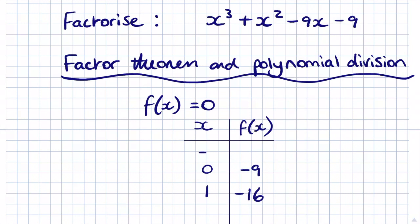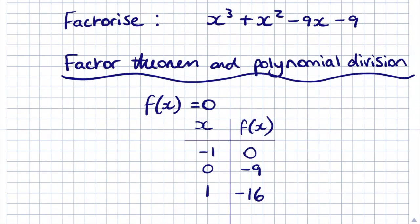So let's try x = -1. (-1)³ = -1, then (-1)² = 1, so those cancel out. Then -9 × (-1) = 9, and 9 - 9 = 0. So that confirms that x = -1 is a solution of the equation, and as a linear factor it's going to be in the form (x + 1).